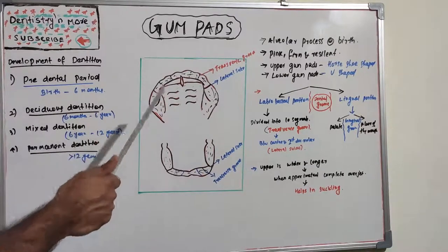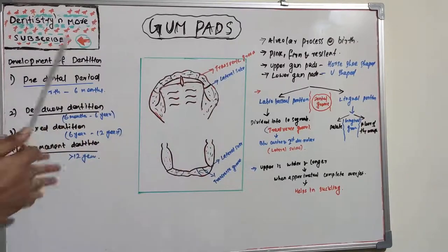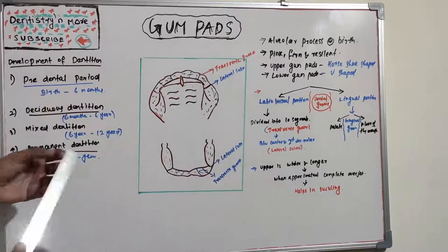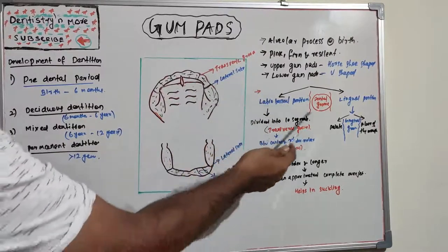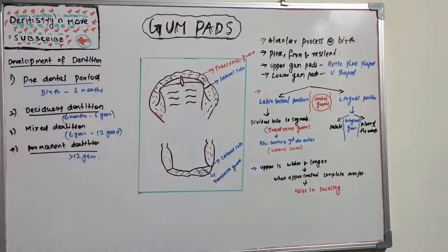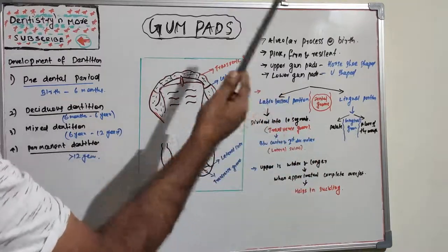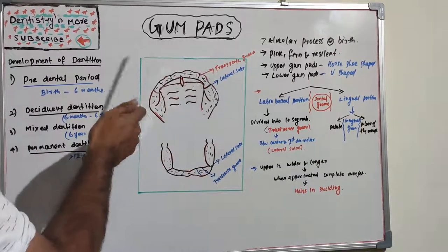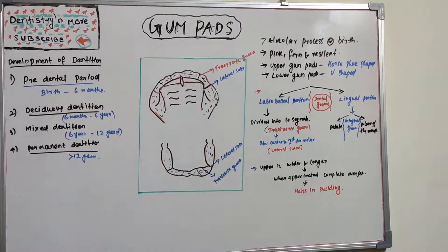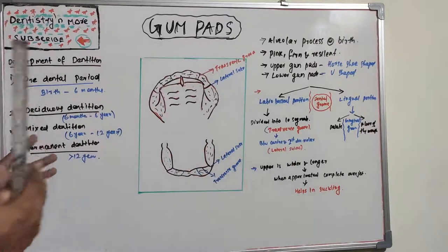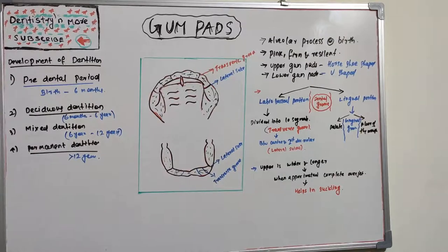In summary, gum pads represent the period where no tooth is present in the oral cavity. The upper gum pad is horseshoe-shaped; the lower is U-shaped. Key grooves: the dental groove separates the labio-buccal and lingual portions; the gingival groove separates the gum pad from the palate or floor of the mouth; the transverse groove separates the 10 segments; and the lateral sulcus is the transverse groove between the canine and first molar. This is a commonly asked question in university exams. Thank you.